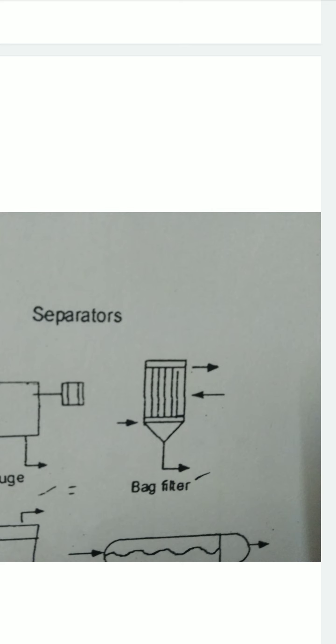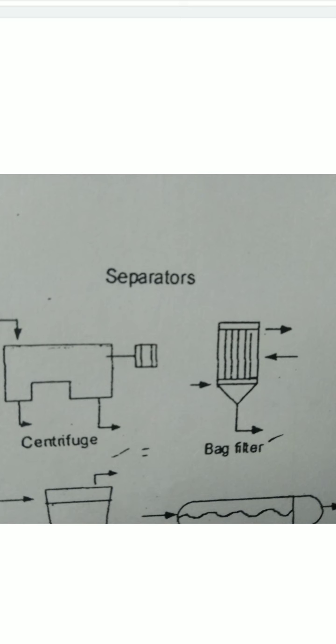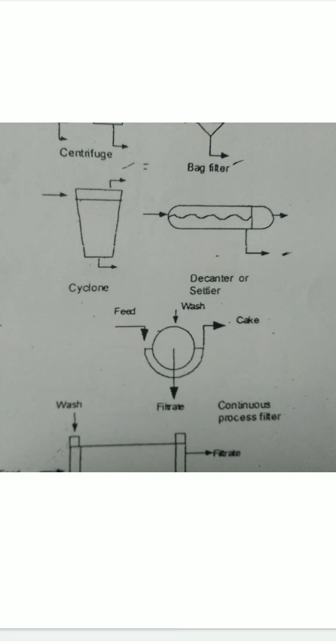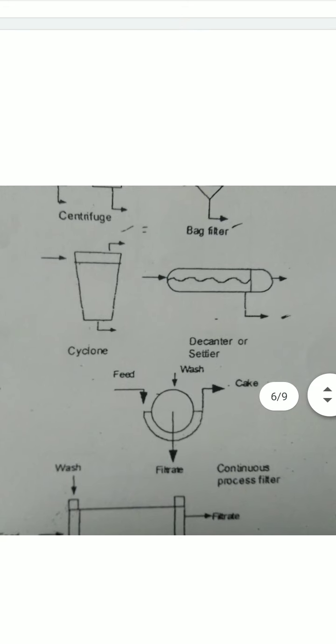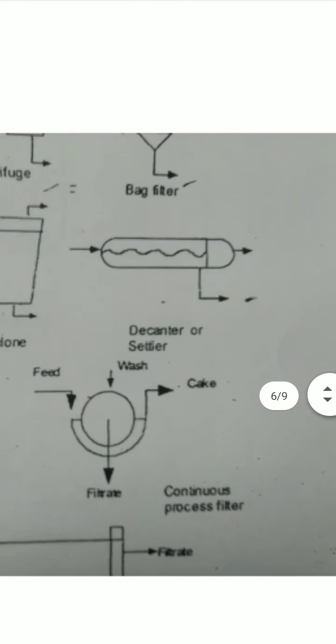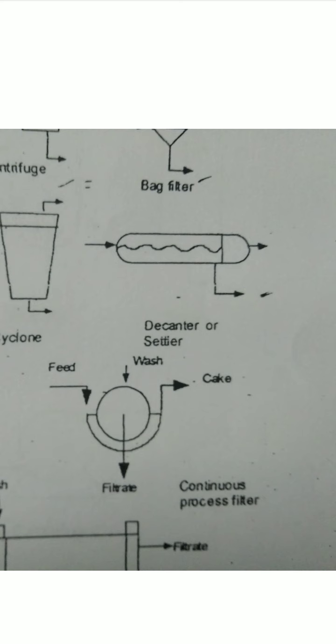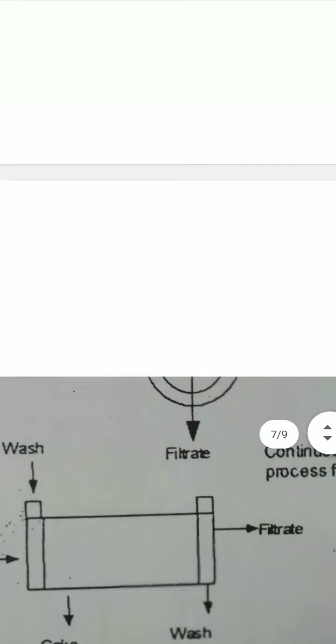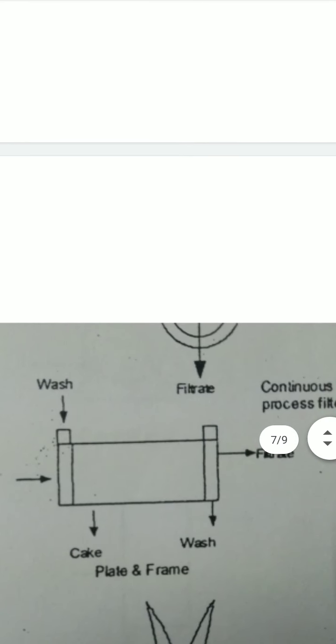These are separators. Separators include: centrifuge, back filter, cyclone, decanter and settler, continuous process filter, and plate and frame filter. All kinds of filters are included in separators.